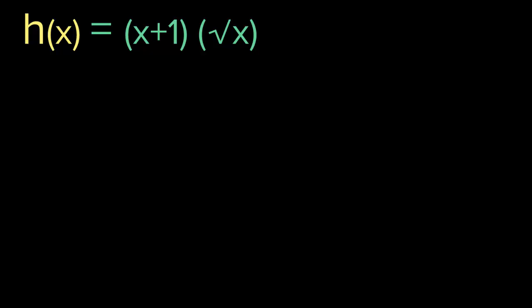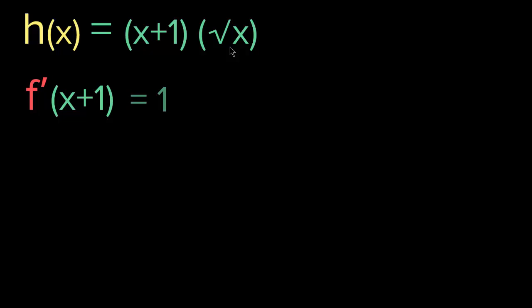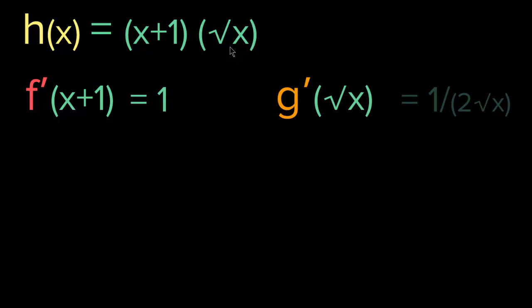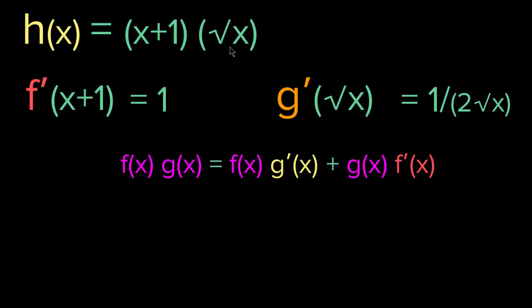Let me give you an example. Let's say we have h(x) equals (x + 1) times the square root of x. We have these two functions — we can call this one f(x) and this one g(x). First, let's find f′(x) and g′(x). We know that f′(x) of (x + 1) equals 1, and g′(x) of square root of x equals 1 over 2 square root of x. Now let's apply the product rule: f(x) times g′(x) plus g(x) times f′(x).